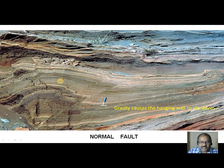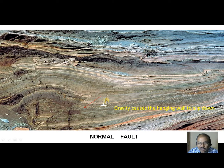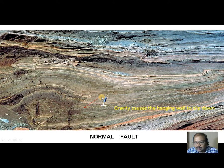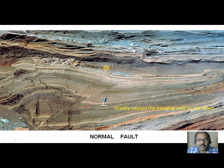With respect to the footwall, this is the footwall and this is the fault plane. The hanging wall goes down — gravity causes the hanging wall to slip down. Hence, this is called a normal fault, also known as a gravity fault.